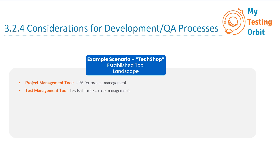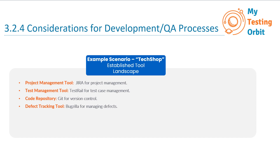For the test management tool, TestRail helps organize test cases, plan test runs, and track test results. For the code repository tool, Git is used to store and version control the website's source code. For the defect tracking tool, Bugzilla is used to record and manage any defects found during testing.